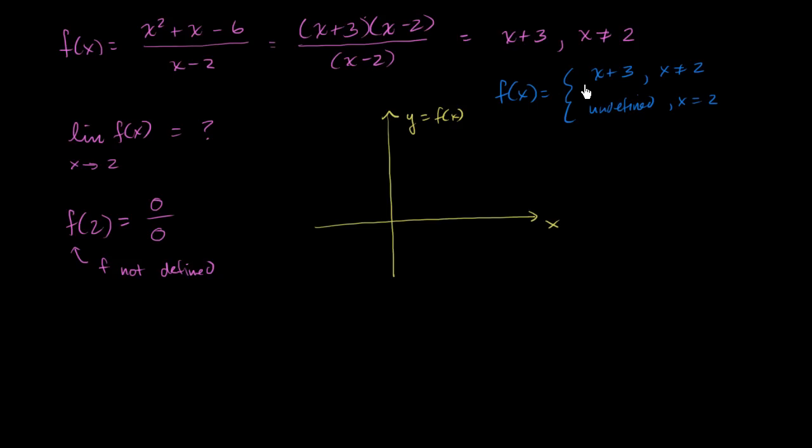Defined this way, f(x) = x + 3. If this is 1, 2, 3, we have a y-intercept at 3 and a slope of 1. But it's defined for all x except x = 2. So this is x = 1, x = 2. When x = 2, it's undefined right there. This is what f(x) looks like.